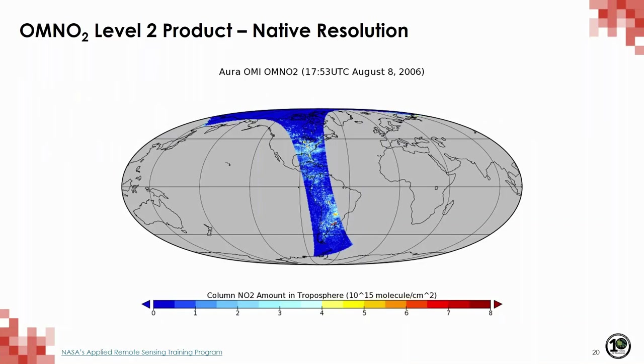The version 3 OMNO2 standard product is called OMNO2 and is available from the NASA Goddard Earth Sciences Data and Information Services Center. We are going to do a data download from this facility. I've included the reference at the end of this presentation for the version 3 standard product. Each file contains one swath, an example of which you can see on your screen.